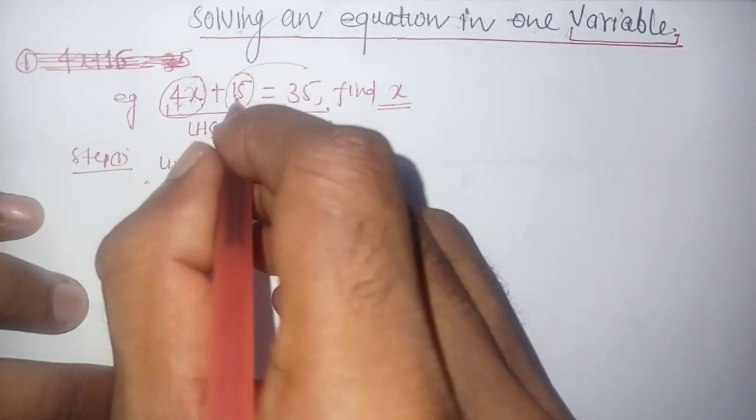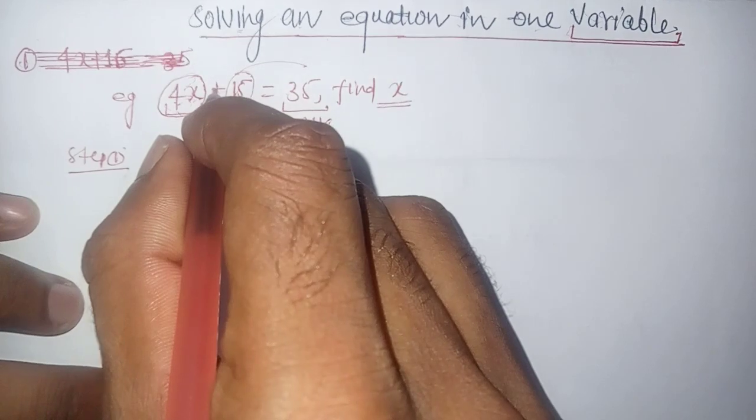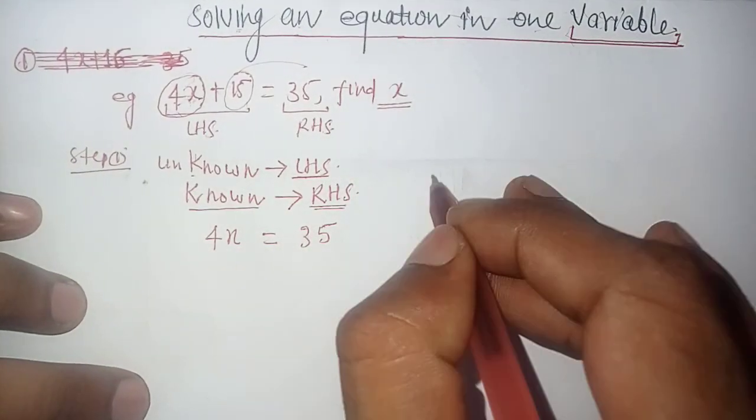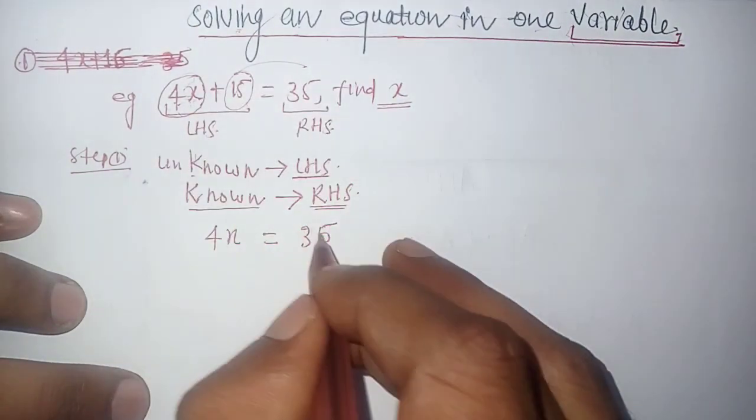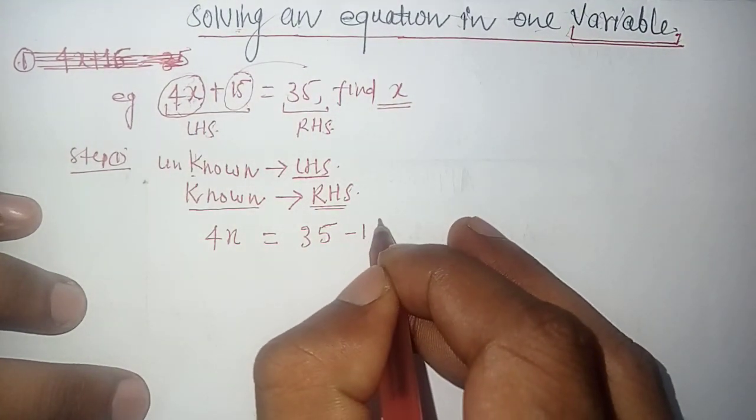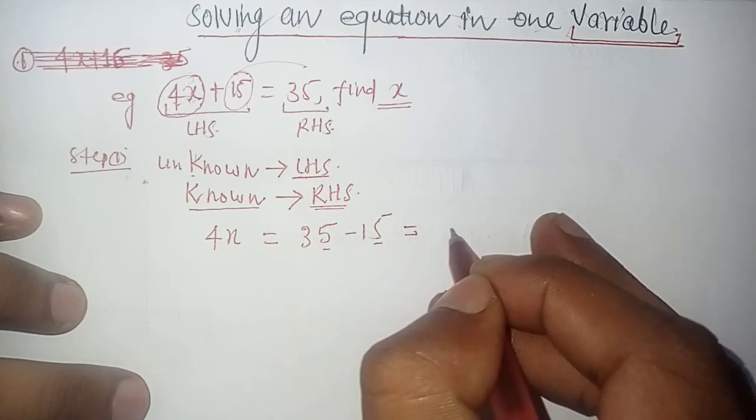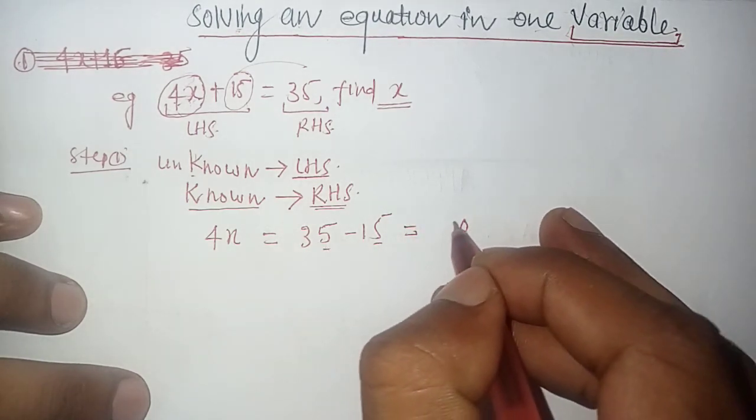Now when 15 is transposed, the plus sign changes to minus, minus changes to plus, or divide becomes multiply, multiply becomes divide. So 35 minus 15 equals 20. Therefore, 4x equals 20.